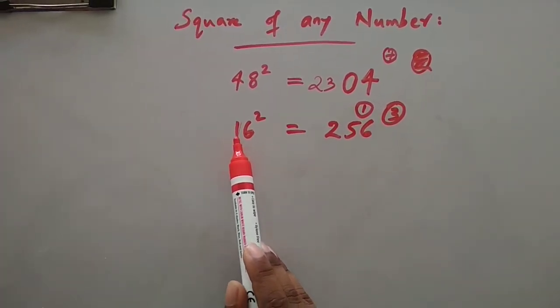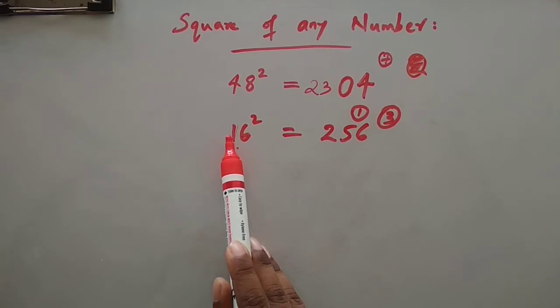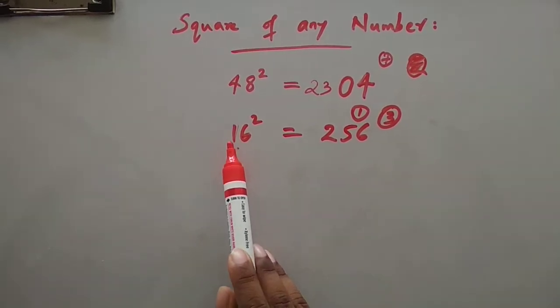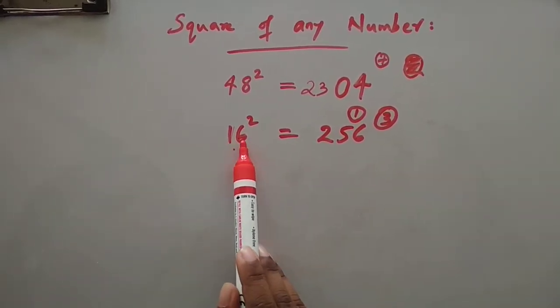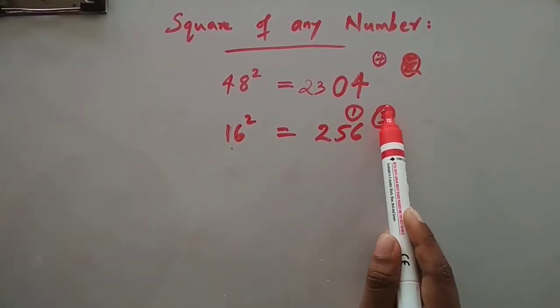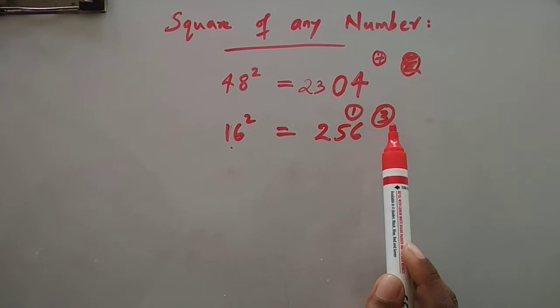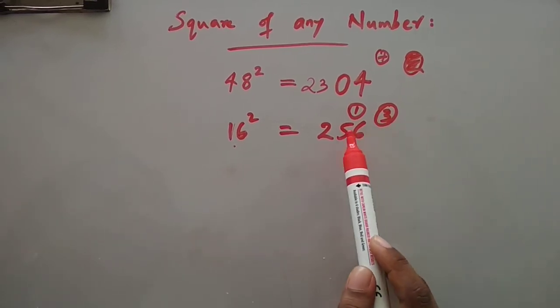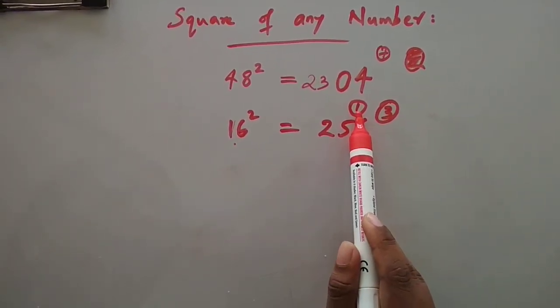Then we will double the smaller number. 1 into 2 is 2, so 2 will be the double number of 1. Then we will multiply 2 with 6 and it will be 12. 12 plus this carried of 3 will be 15.